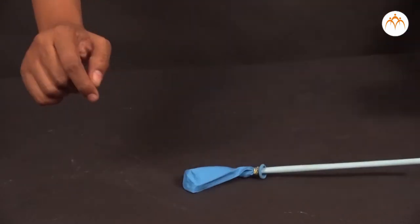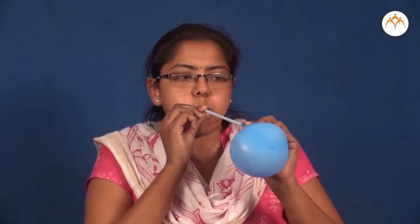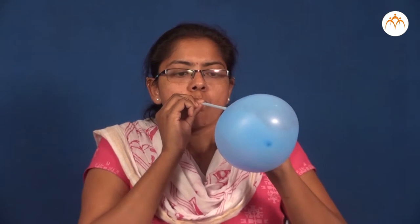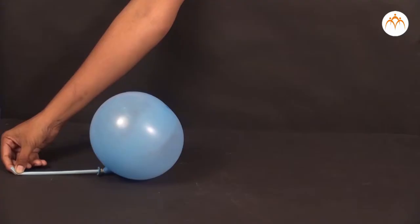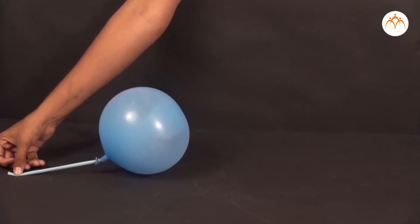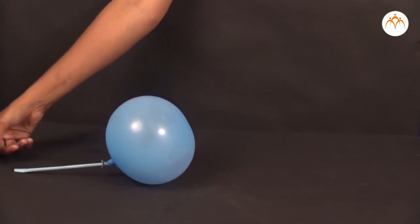Now, inflate the balloon by blowing the air through the rubber pipe. Tightly close the end of the rubber pipe by pressing with the finger. Without removing the finger, place the balloon carefully on the flat surface. After a while, remove the finger.